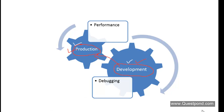Both of these build modes have their own priority. For example, when we are in Debug mode, the most important thing is debugging — we want to debug the code properly and see the full information of what is happening inside the code. We are not concerned with performance but rather with debugging. In Release mode, the most important thing is not tracking errors but running the application as fast as possible — in other words, performance is the main priority.